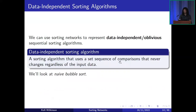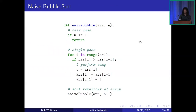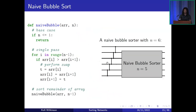Sorting networks can represent data-independent, or data-oblivious, sorting algorithms — ones that use a fixed sequence of comparisons that never change regardless of the input. As an example, consider what I call naive bubble sort. Normally bubble sort has an optimization where you track whether any swaps were made in a pass and terminate early if not. This naive version doesn't have that optimization. It's a recursive implementation: if n ≤ 1, return; otherwise do a single pass comparing pairwise adjacent elements and swapping if out of order, then recurse with n reduced by one.